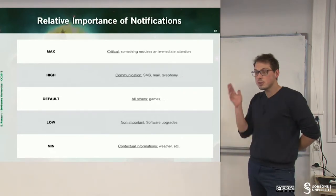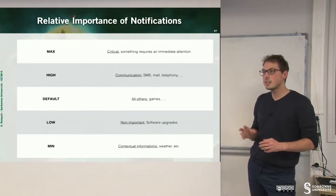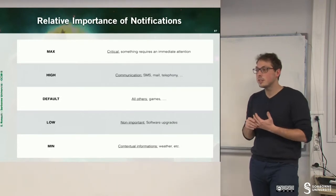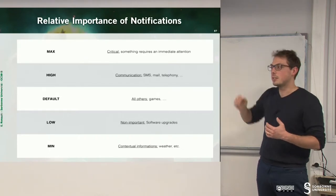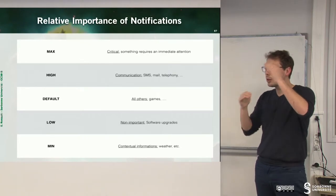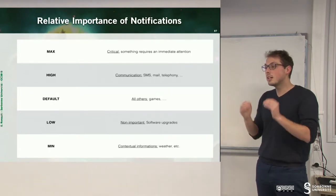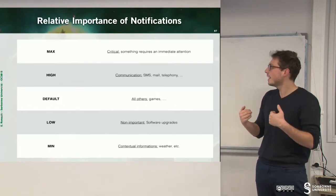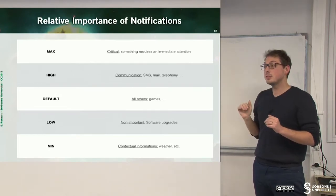Suppose you define your own application - you may think that your application is the most important thing in the phone, and so you may consider that the notification of your application will be the topmost. Because when you have a lot of applications, the operating system will just reorder applications according to their importance. You are wrong. So, when you define your application, you have to define the priority of your notification.